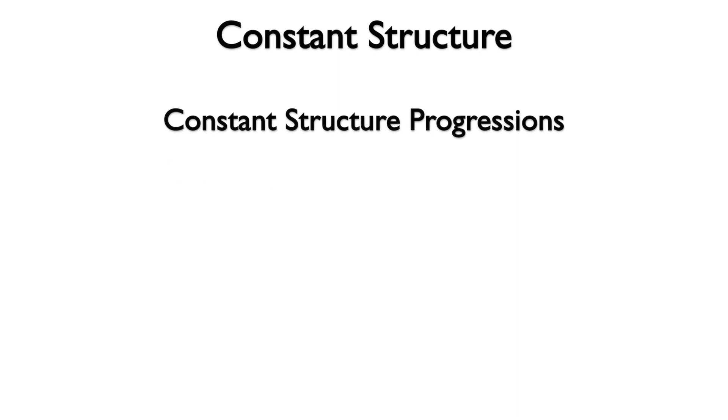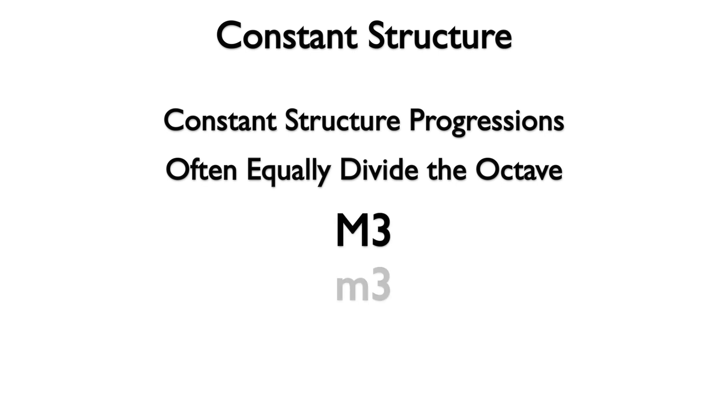Constant structure progressions often move in intervals that equally divide the octave: major 3rds, minor 3rds, or major 2nds.